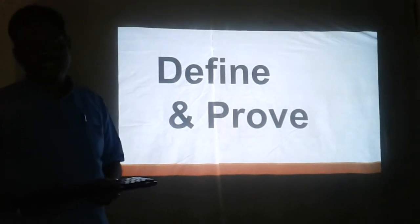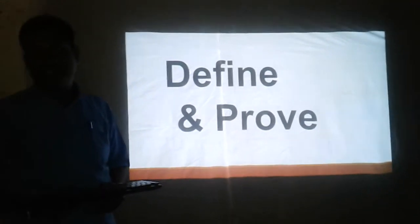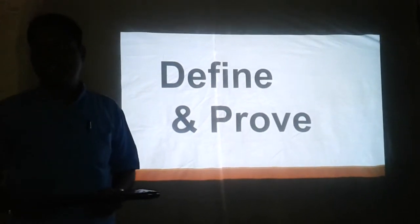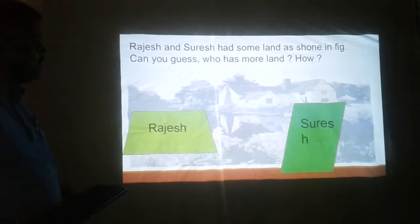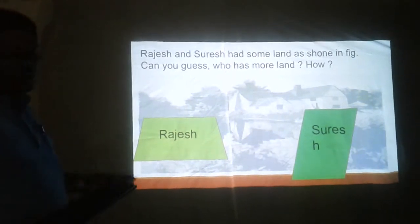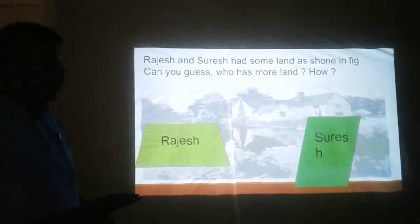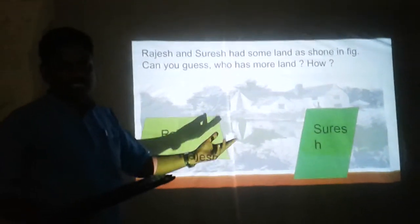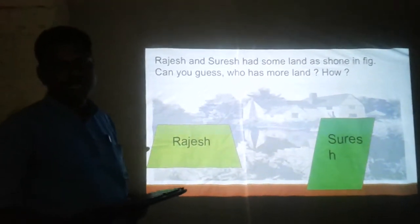Now, the main part of this lesson comes under the unit define and prove. In this part, we should give the theorems, the derivations of formulae, and the concept clearance. This will help the students understand the particular lesson. Here, I have given an example. Rajesh and Suresh have some land as shown in the figure. We should ask the students: can you guess who has more land? Obviously, there may be so many answers — some will say Rajesh has more land, some will say Suresh has more land. Because by mere observation only, we cannot determine the area occupied by the figure.